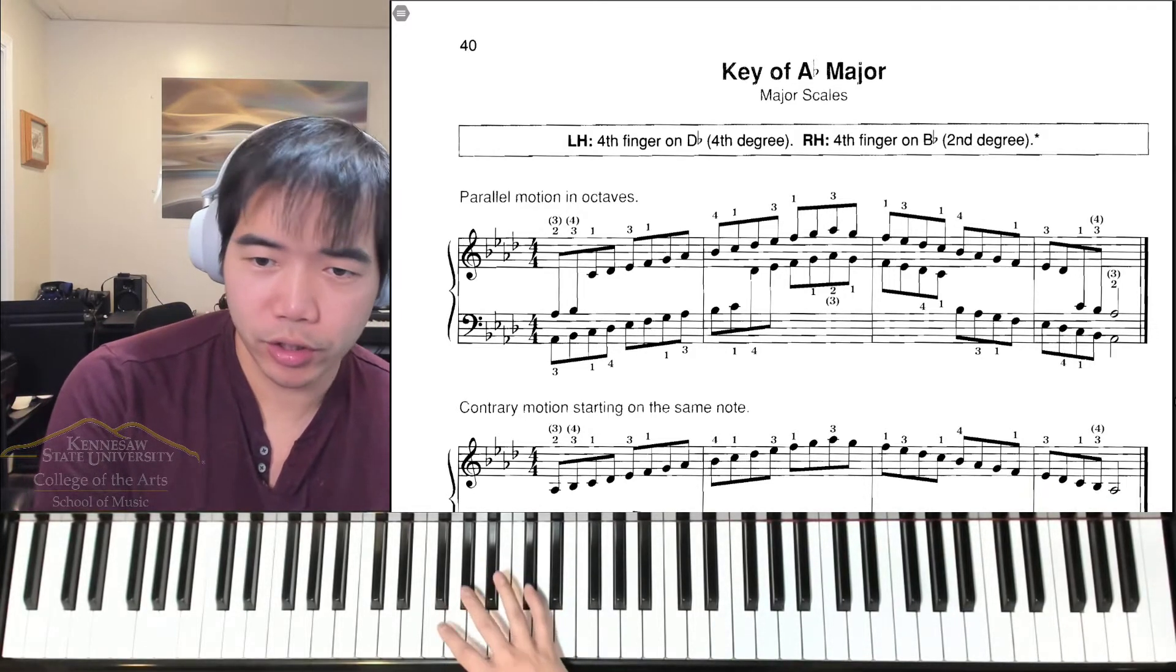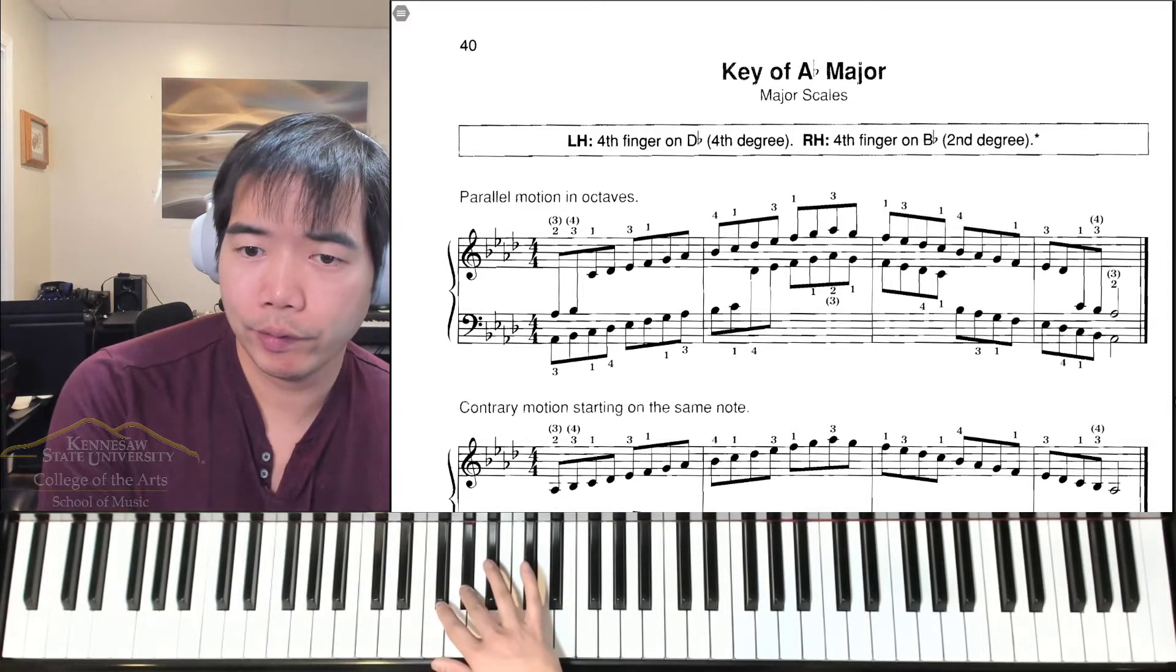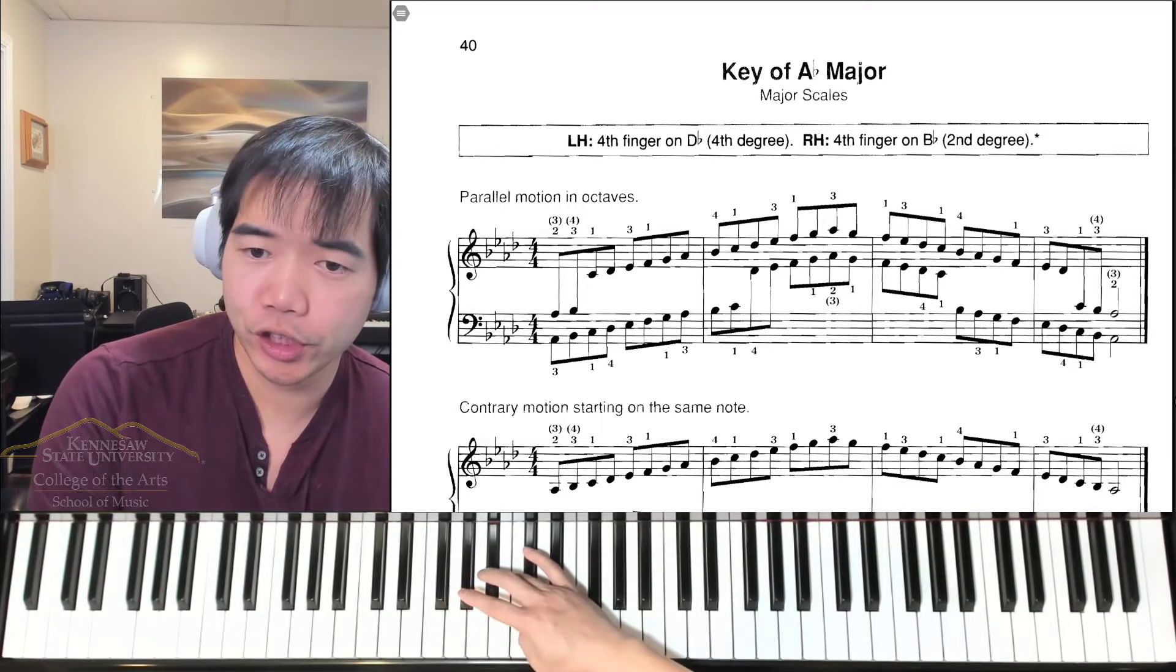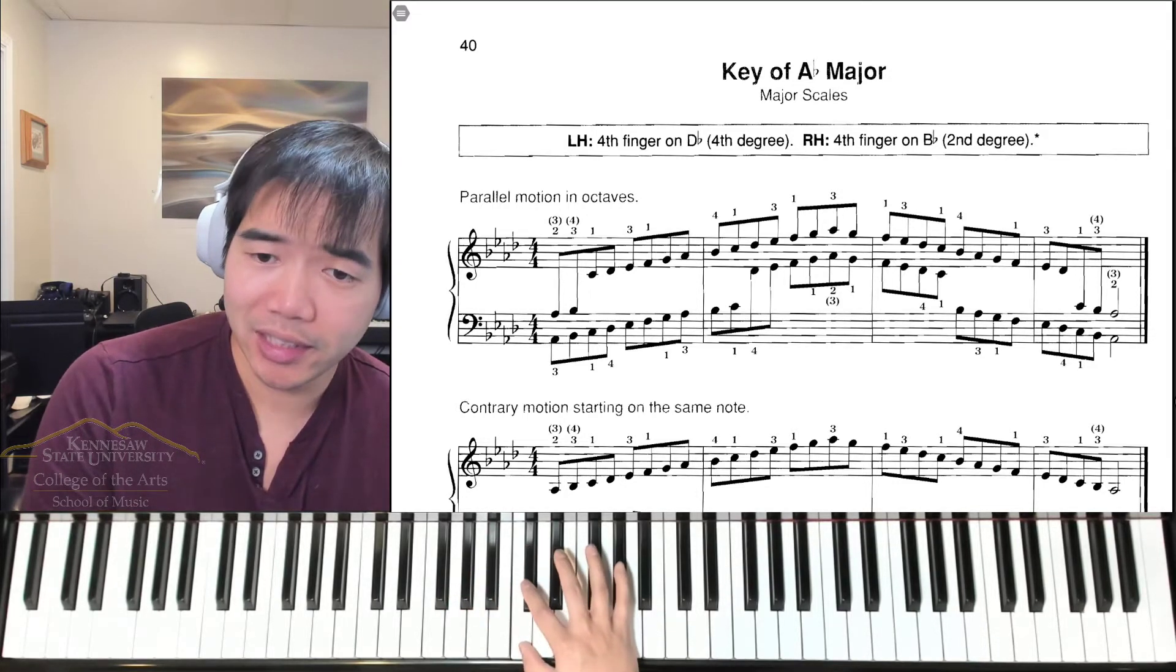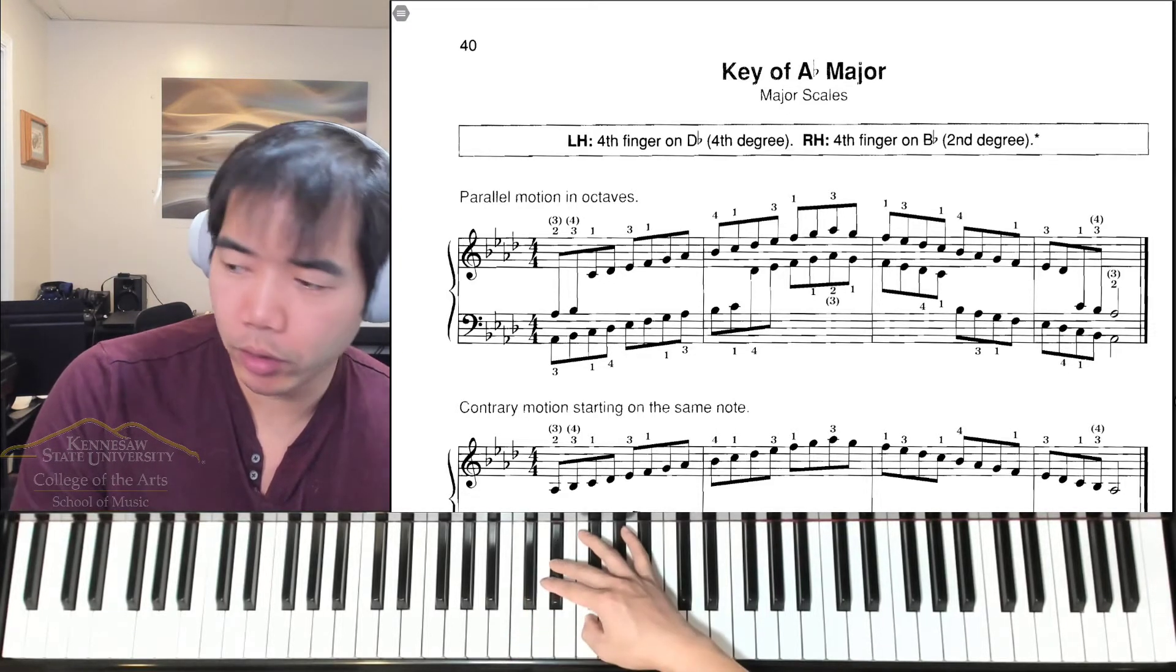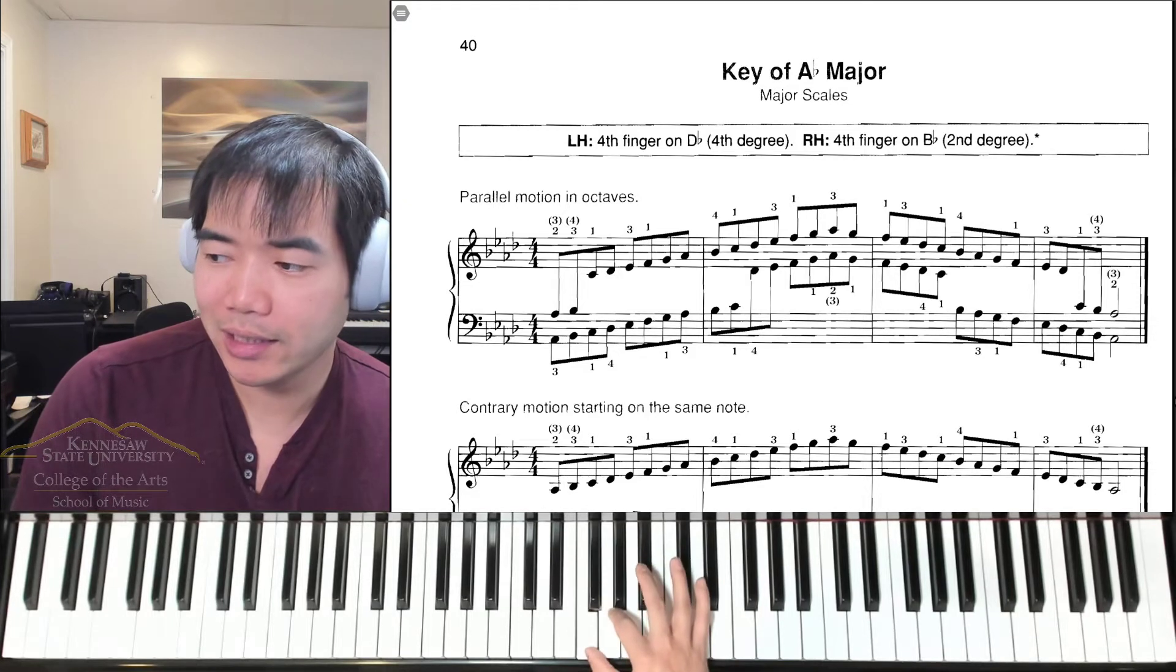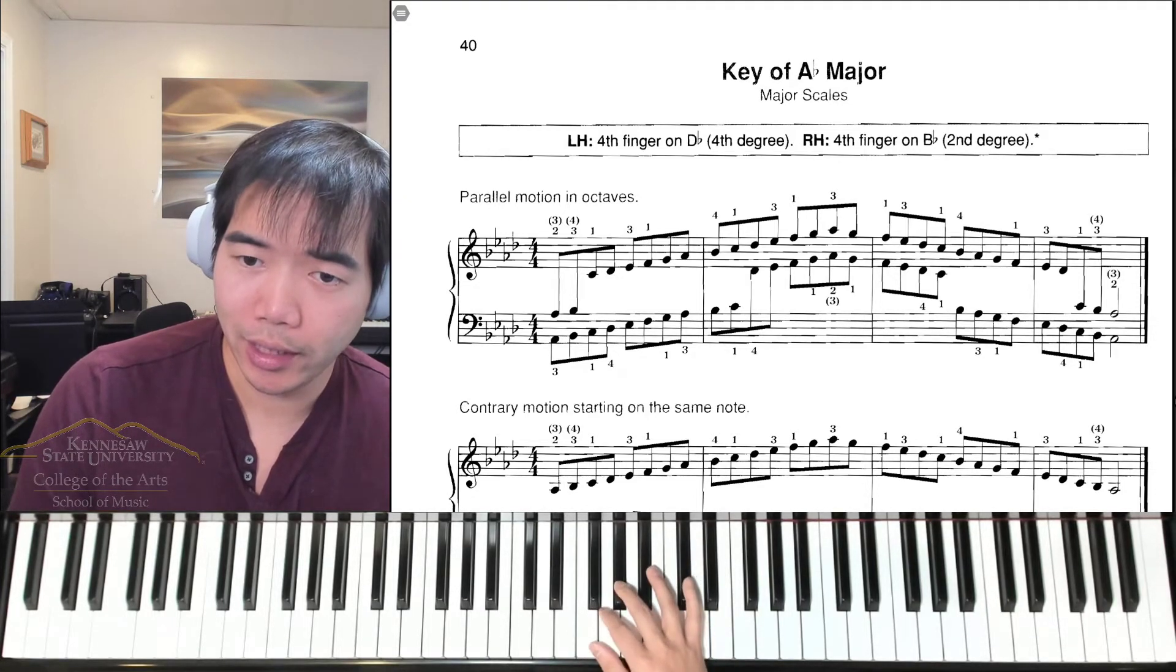For the right hand, we're going to start with third finger on A flat. Fourth finger will play B flat, then we shift, our thumbs will be on C natural. Second finger is on D flat, third finger on E flat, then your thumb goes to F natural, second finger on G natural, third finger on A flat.